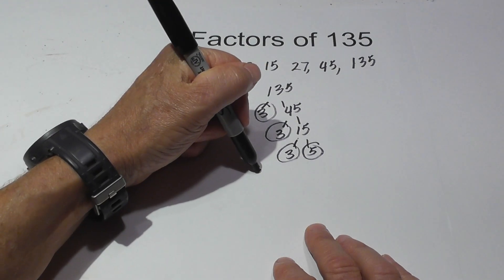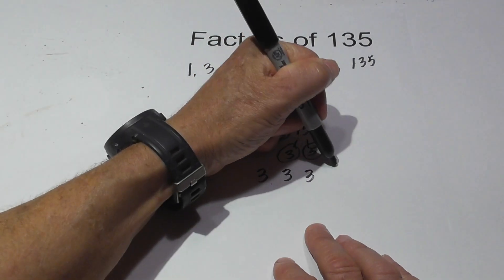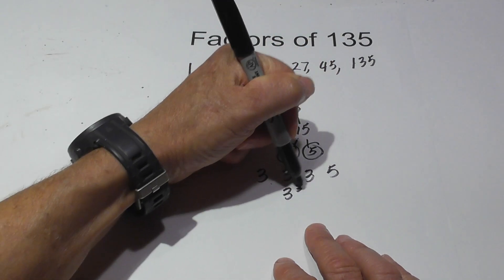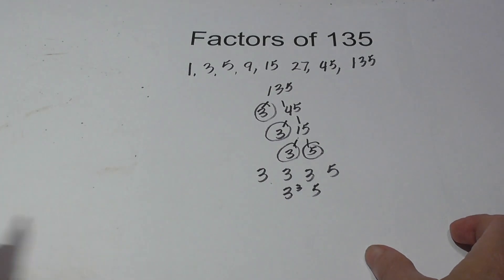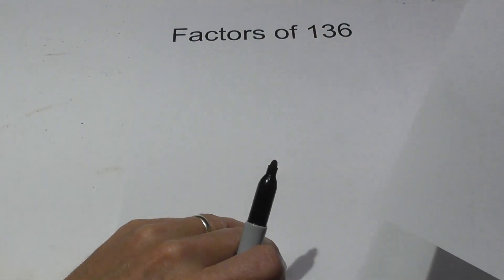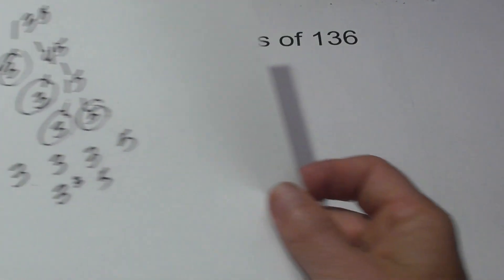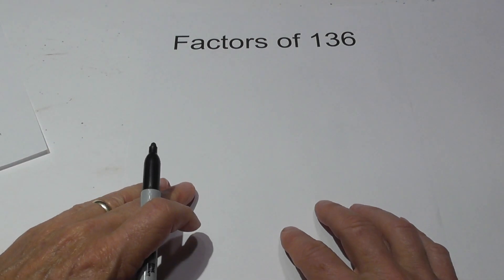So the prime factorization, the prime numbers of 135, equal 3, 3, 3, and 5, or you could write this 3 cubed times 5. Next let's look at 136. Let me switch the paper very quickly and we'll get started with 136.